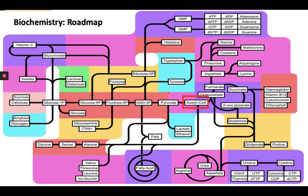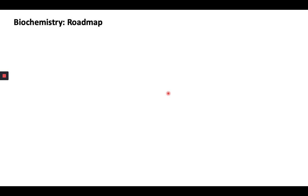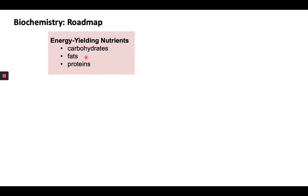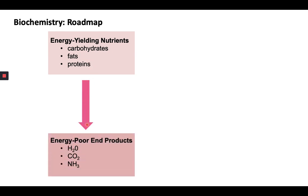Biochemistry and metabolism can be simplified and will just basically boil down to this. The overall roadmap of biochemistry involves generally two directions. The first is the breakdown of highly organized, complex, energy-dense substances like carbohydrates, fats, and proteins — broken down into smaller, simple molecules like water, carbon dioxide, and ammonia. This process is energy-producing or exergonic and is called catabolic. It involves oxidation, or the loss of electrons from molecules, producing reducing equivalents like NADH and NADPH, and the high-energy molecule adenosine triphosphate, or ATP.